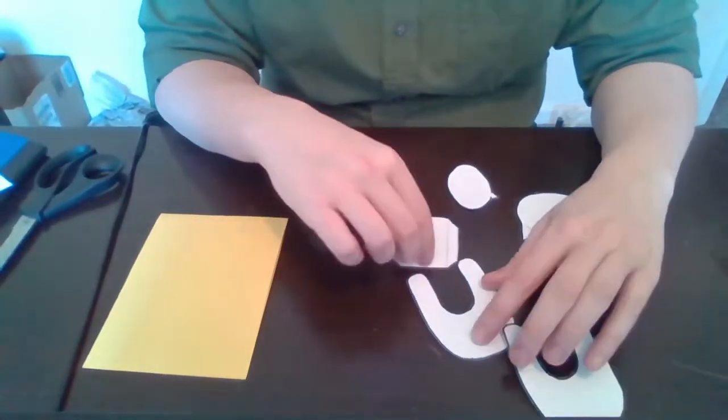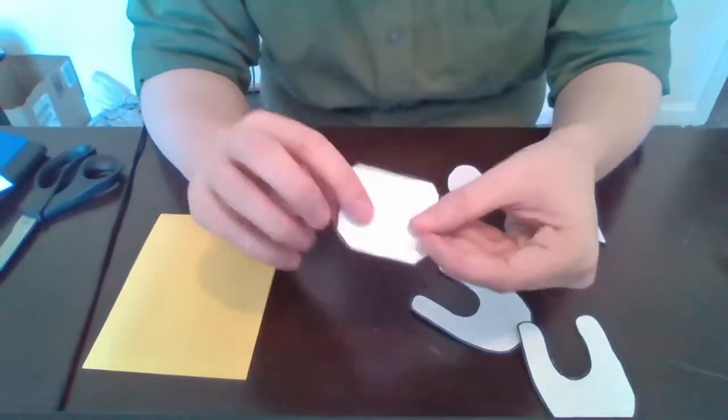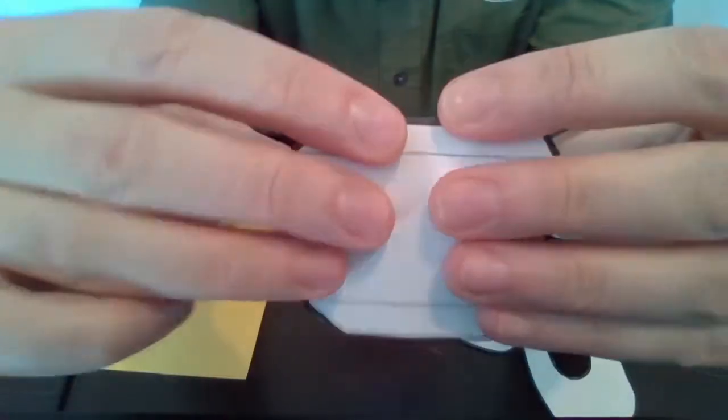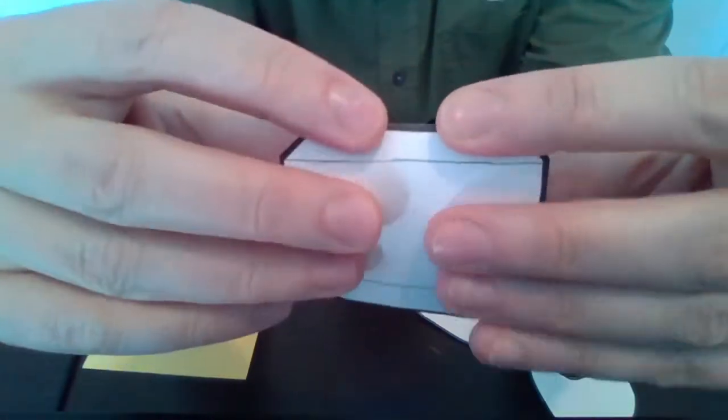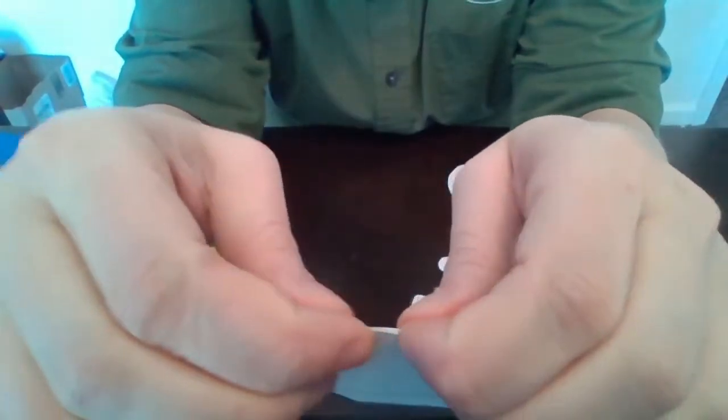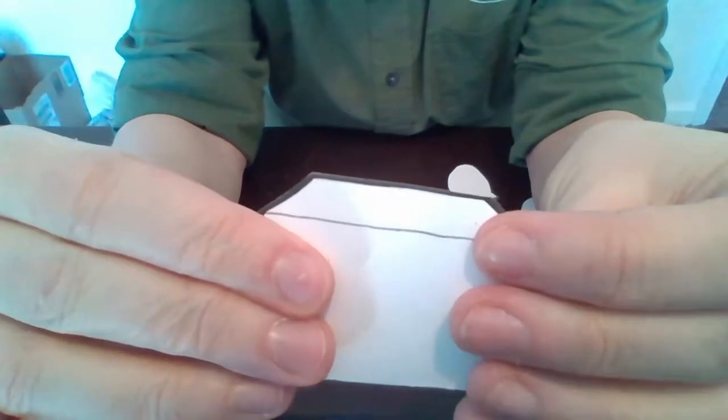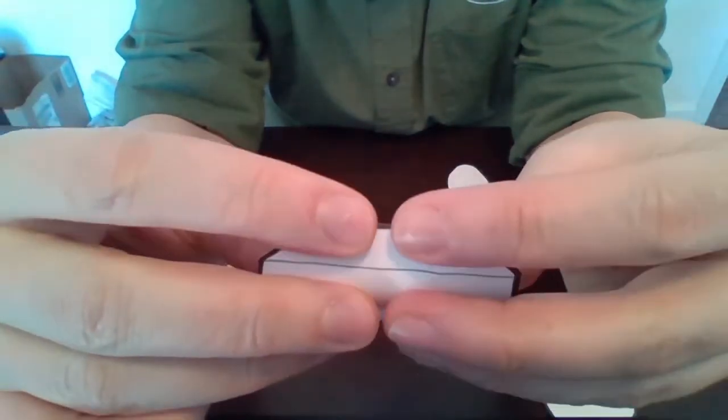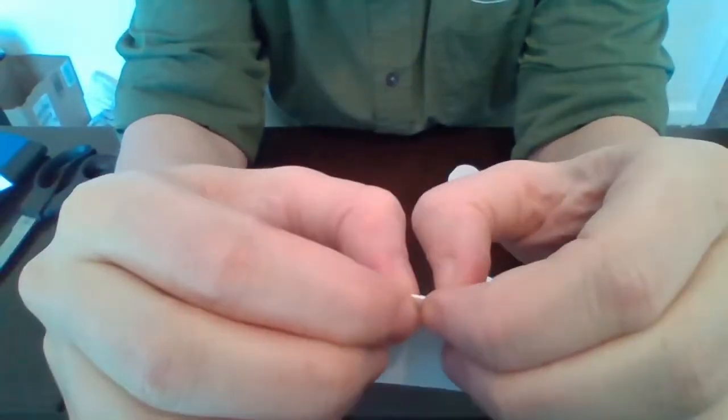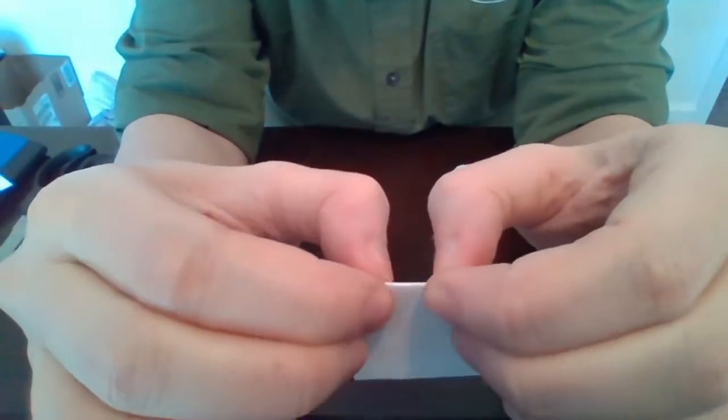the next thing that we want to do is fold along the lighter lines on our square piece. So you just fold along that finer line and do the other side. It's kind of tough paper to work with, but you can do it.